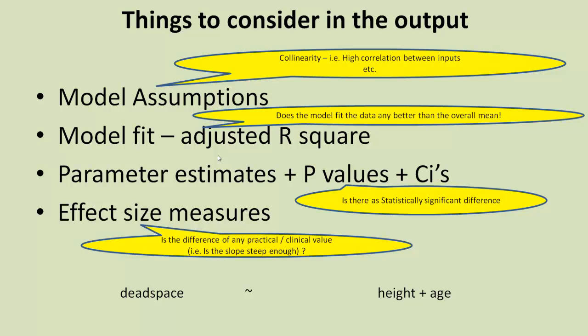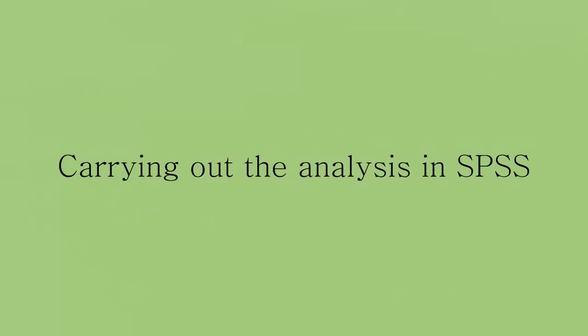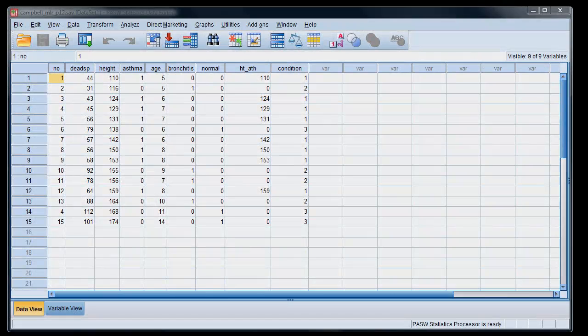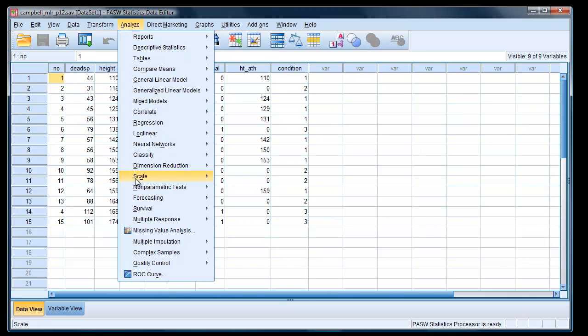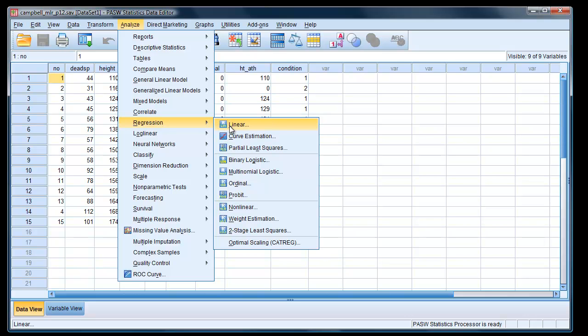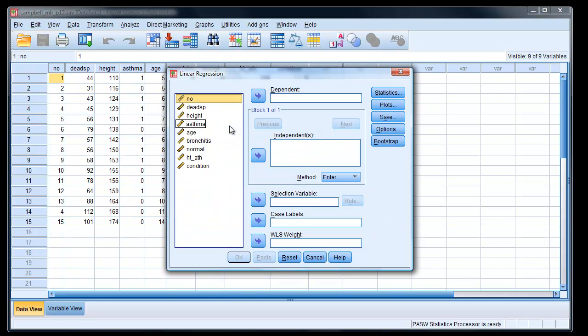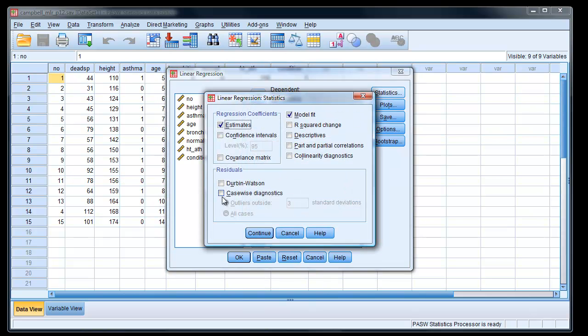So here we are in SPSS. We want to simply carry out the regression analysis as described by Campbell. So we're going to analyze, regression, linear. And the dependent variable is dead space, and the two independent variables, the input variables, are height and age.